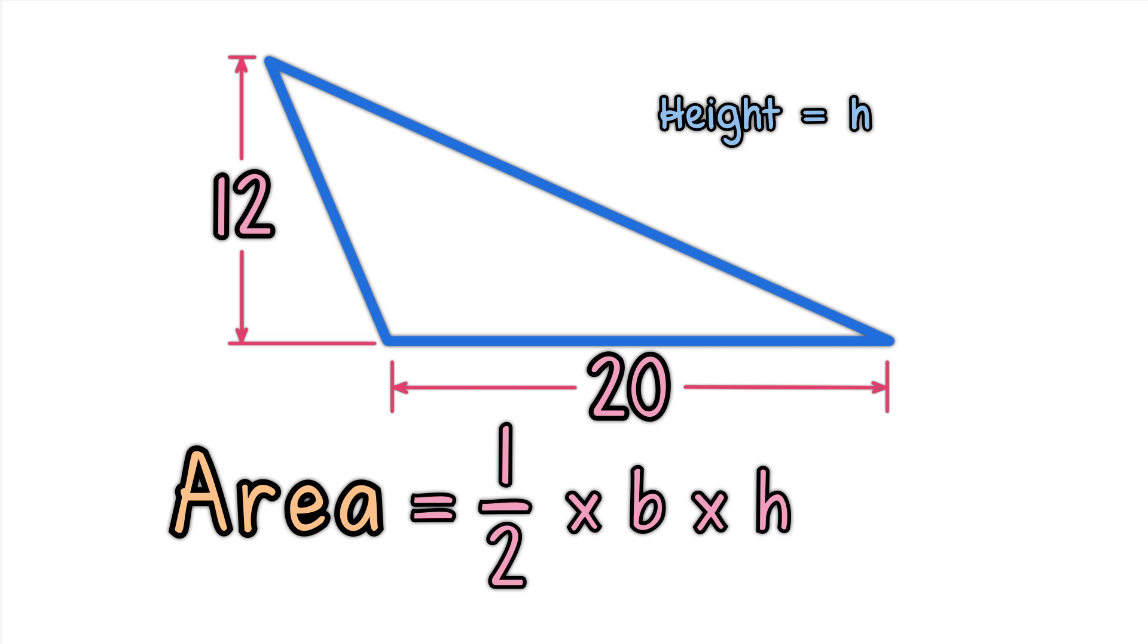Height equals H equals 12. Base equals B equals 20. The area equals one half times the base times the height, which equals one half times 20 times 12, which equals 120.